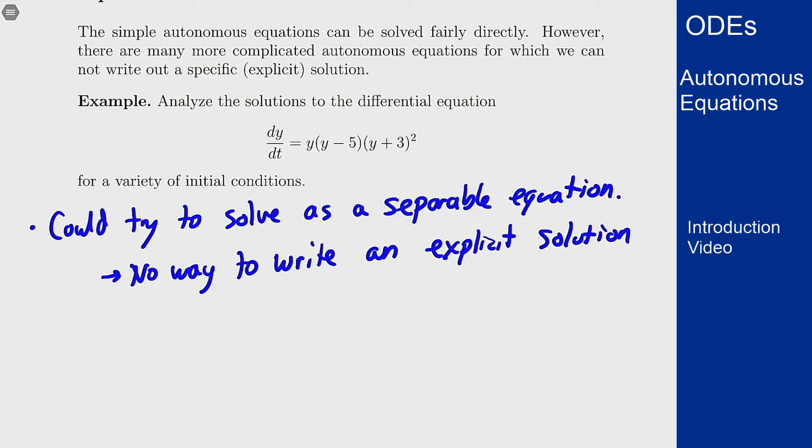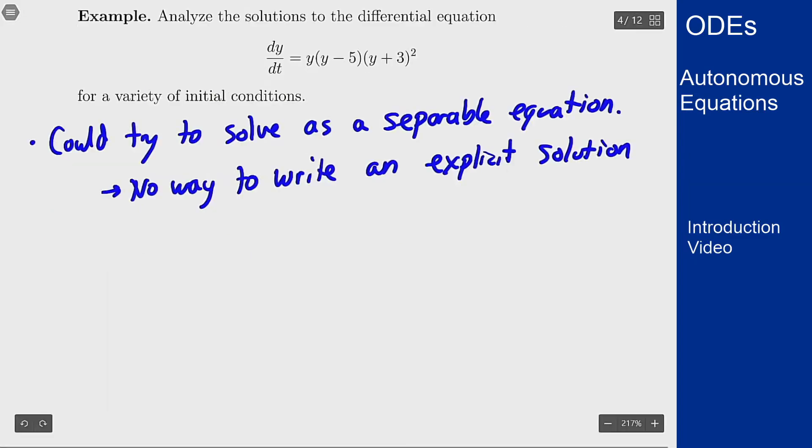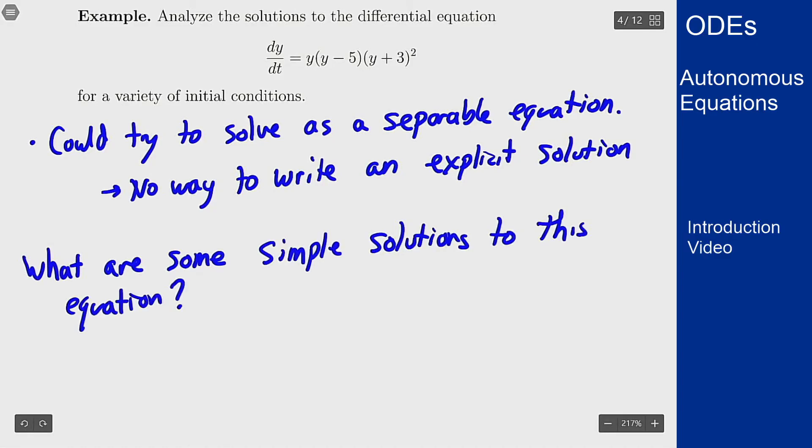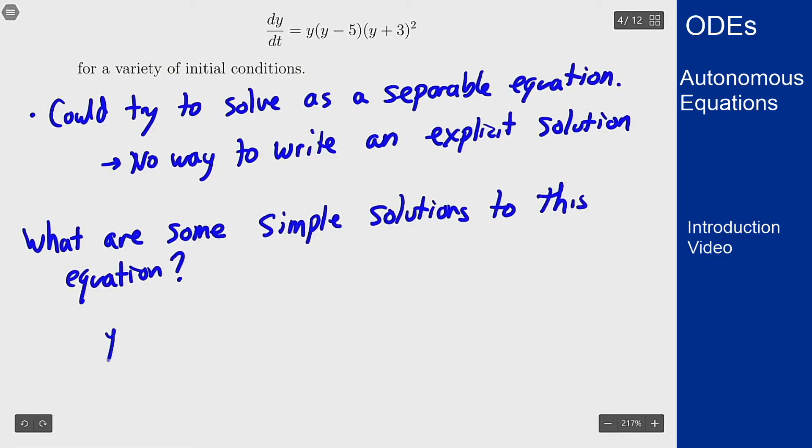Well one thing we can try is let's look for some easy solutions. So what are some simple solutions to this equation? Well one right off the bat what if I take y of t to be identically 0 for all values of t. What happens then?